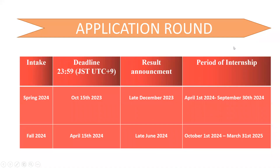OIST runs applications two times a year. The first is for spring intake and the second is for fall intake. Right now the application intake is running for spring. The deadline to apply is the 15th of October, and if you are selected, you get your result in late November. Your period of internship will then be from the first week of April to the last week of September.